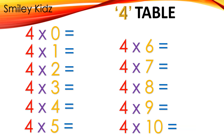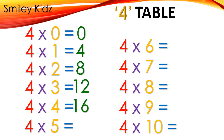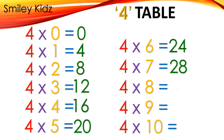Table 4: 4×0=0, 4×1=4, 4×2=8, 4×3=12, 4×4=16, 4×5=20, 4×6=24, 4×7=28, 4×8=32, 4×9=36, 4×10=40.